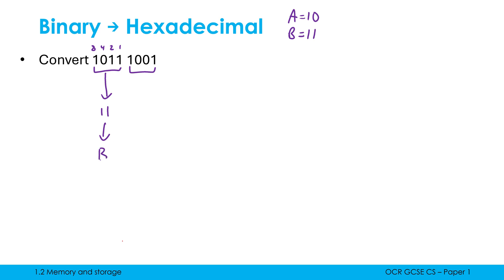Eleven is equivalent to B in hexadecimal. And we do the same with our other nibble. If I've got multiple I do the same with the other ones as well. This in denary is going to be eight plus one which is nine. Well nine in hexadecimal is just nine because the digits zero to nine are shared with denary.